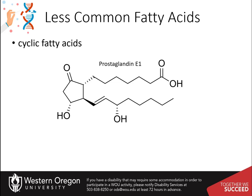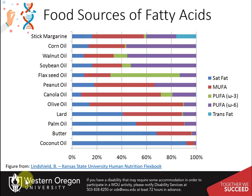Here is a chart showing the level of saturated and unsaturated fatty acids present in different food sources. Saturated fat levels are shown in dark blue. Monounsaturated fats (MUFAs) are shown in red. Polyunsaturated fats with omega-3 double bonds (PUFAs) are shown in green, and polyunsaturated fatty acids with omega-6 double bonds (PUFAs) are shown in purple. The turquoise bar represents fatty acids with trans double bonds.